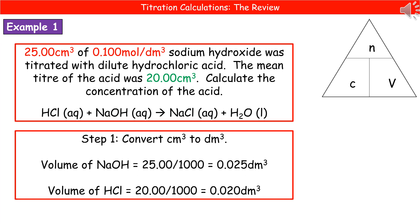First thing to do is get your highlighter out — underline, circle, whatever it is — to make those important bits of information stand out, so that when you're using them throughout the question, you don't have to keep reading the whole thing through. We've got 25 centimetres cubed of a 0.10 solution, so we've put that in one colour to remind us those two go together. And we've got a volume of 20 centimetres cubed for the other.